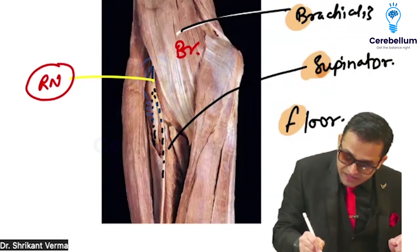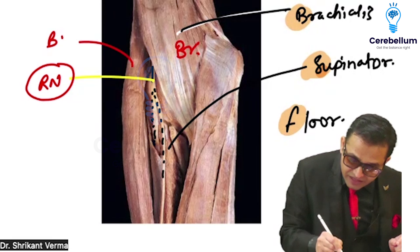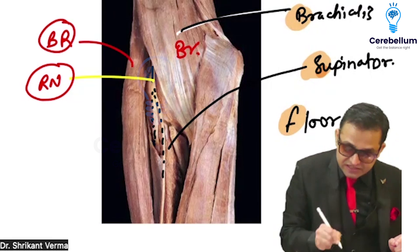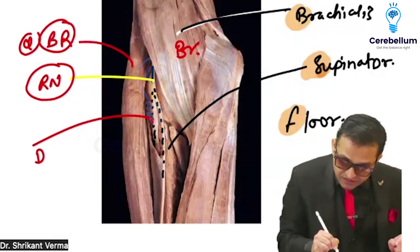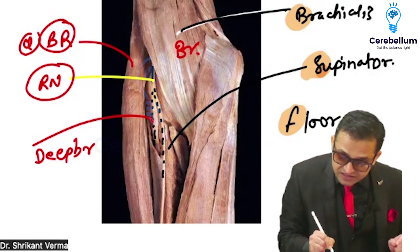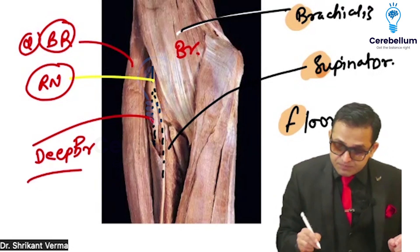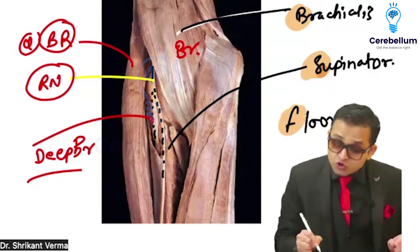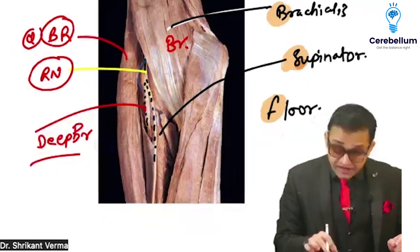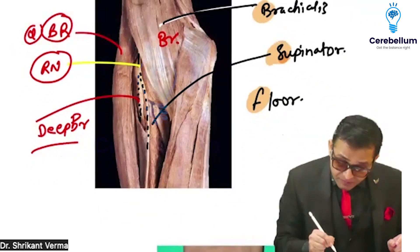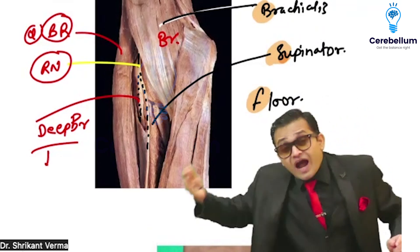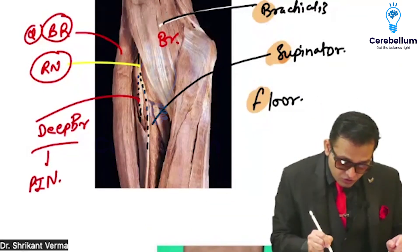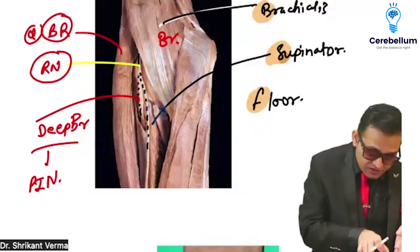The radial nerve passes between brachialis and brachioradialis — that itself is an MCQ. The deep branch pierces the supinator muscle — another MCQ — and then passes behind the interosseous membrane to become the posterior interosseous nerve.